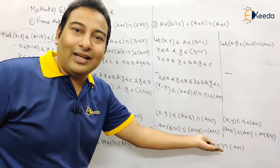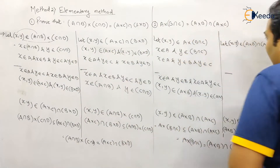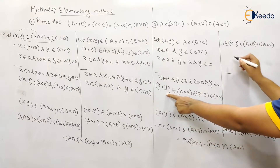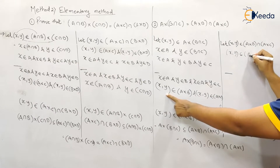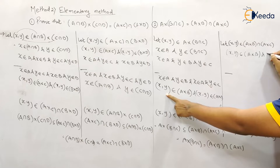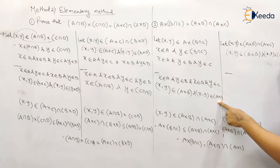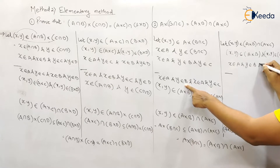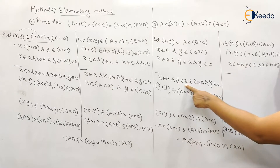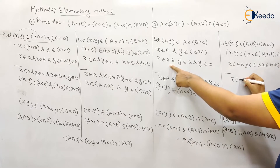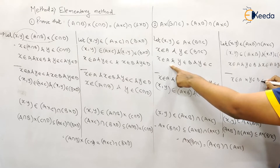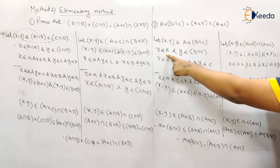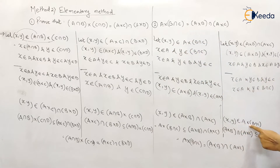For the second part, write it down in reverse order. Starting from x comma y belongs to A×B ∩ A×C, the next line is: x belongs to A, y belongs to B and x belongs to A, y belongs to C. Then: x belongs to A, y belongs to B and y belongs to C. Then: x belongs to A and y belongs to B∩C. And finally: x comma y belongs to A × (B∩C), which is the LHS.